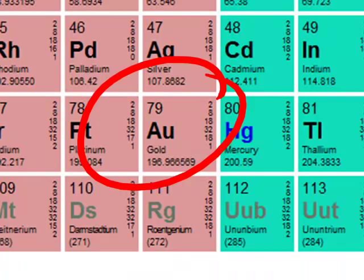Gold has a molar mass of 197 daltons per atom, or 197 grams per mole.